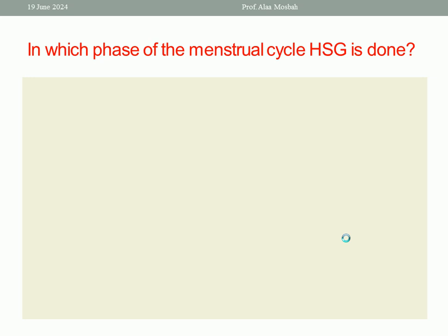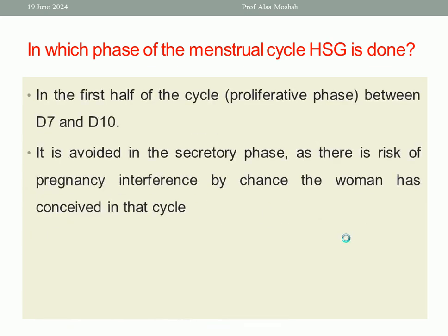In which phase of the menstrual cycle is Hysterosalpingogram performed? Is it in the proliferative or secretory phase? It is in the proliferative phase, between day 7 and day 10 — the first half of the cycle.